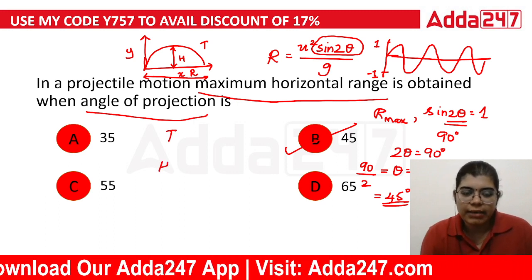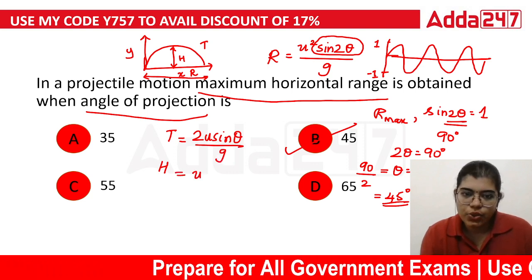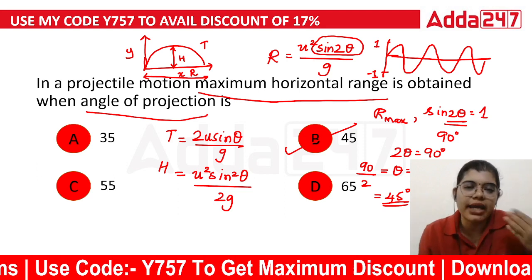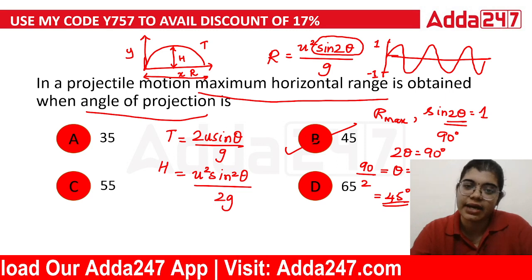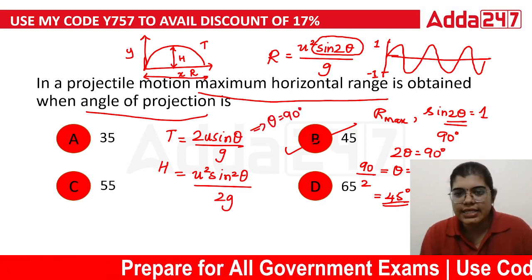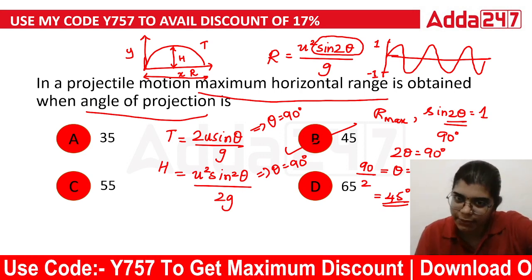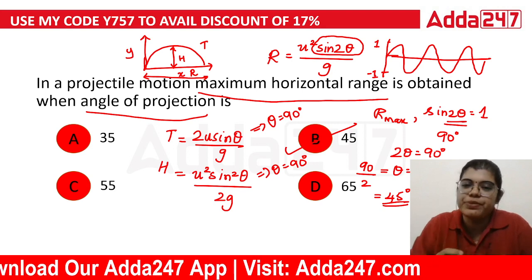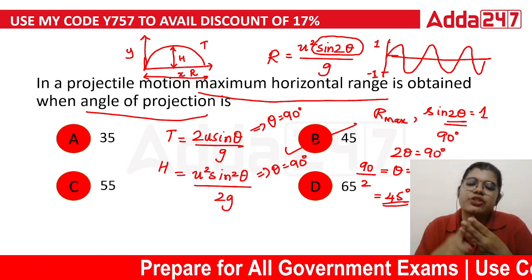Time of flight equation is 2u sinθ / g. Maximum height equation is u² sin²θ / 2g. So maximum horizontal range is at 45 degrees, maximum time of flight is at 90 degrees, and maximum height is also at 90 degrees. These three equations are important to remember.